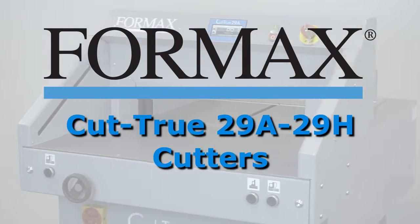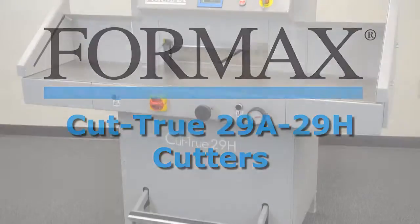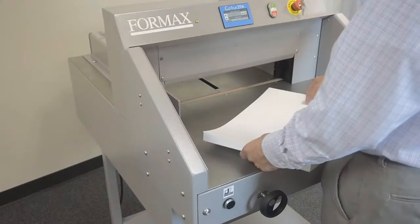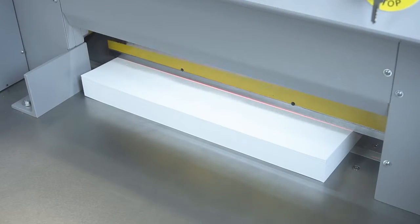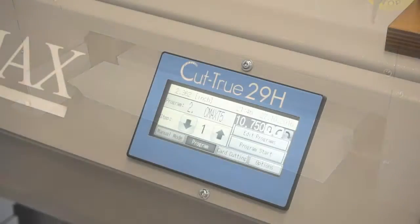Formax presents the Cut-True 29A and 29H Cutters. The Formax Cut-True 29A Automatic Electric Cutter and 29H Hydraulic Cutter provide precision paper cutting for sheets up to 20 inches wide.